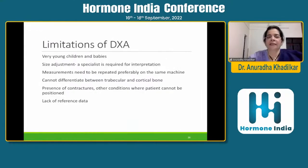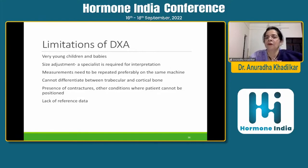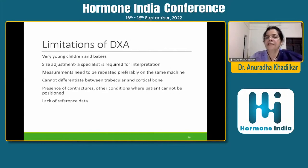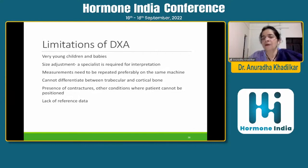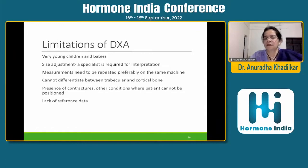Limitations of DEXA: Diagnosing bone density in very young children is very difficult — very young babies have so much soft tissue that it is hard to assess the bones, and under two years there is practically no reference data. Size adjustment requires specialist interpretation. Measurements need to be repeated preferably on the same machine. On DEXA you cannot differentiate between trabecular and cortical bone — the trabecular bone score doesn't work well in children. Contractures or inability to position the patient, children crying, and the lack of reference data are all ongoing challenges.